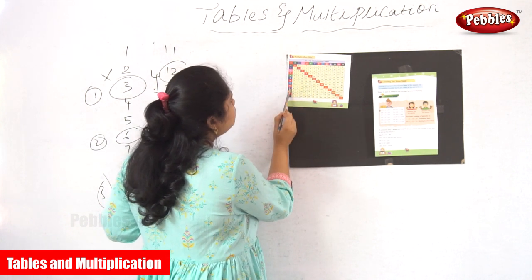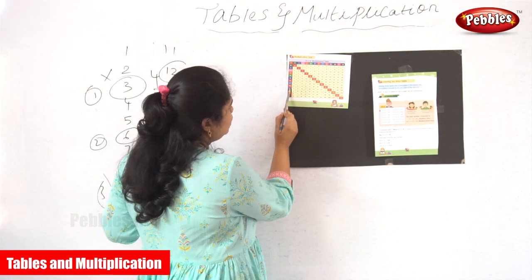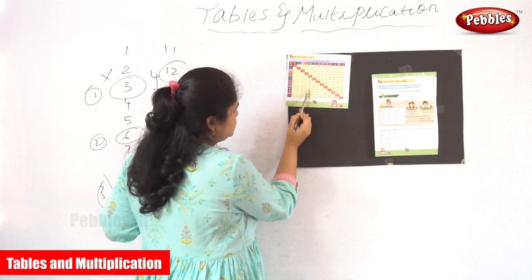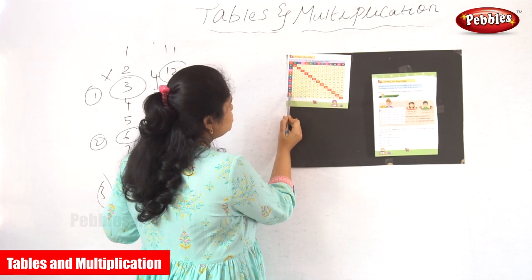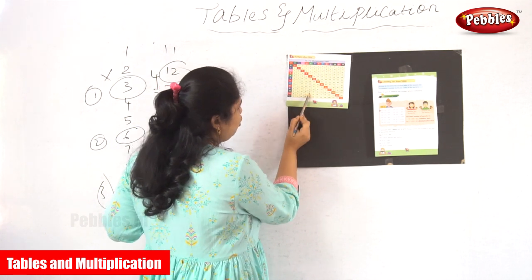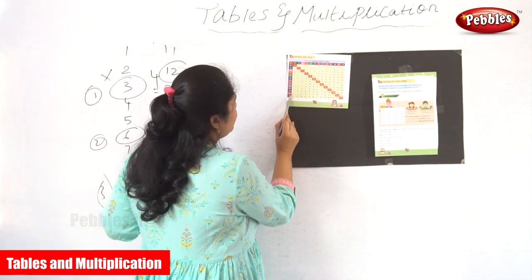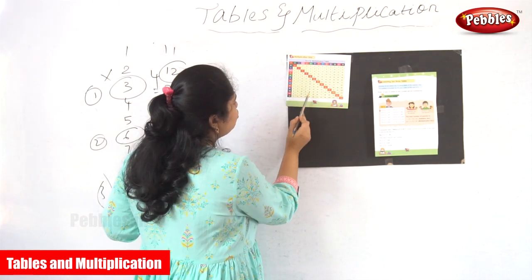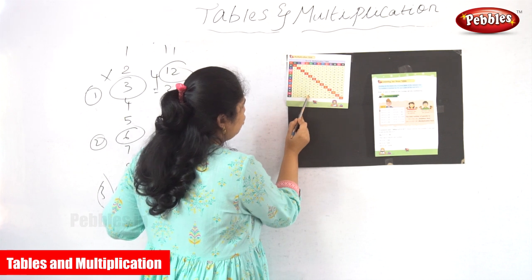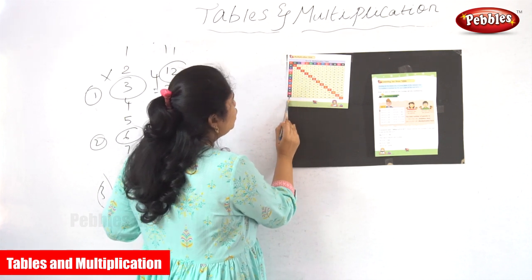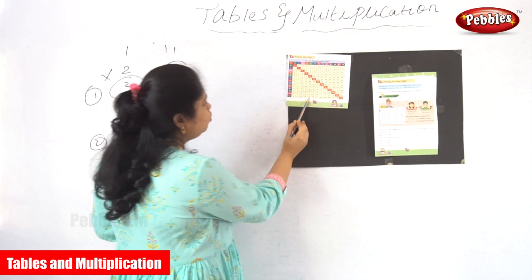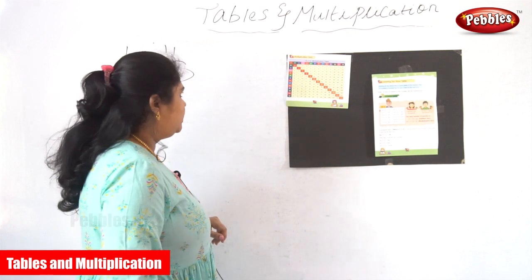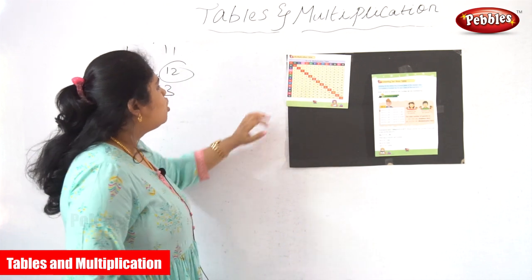9 into 4 is equal to 36. 10 into 4 is equal to 40. 11 into 4 is equal to 44. 12 into 4 is equal to 48. Isn't it?